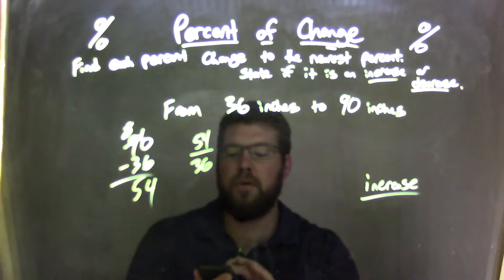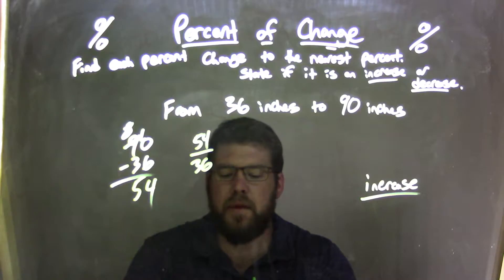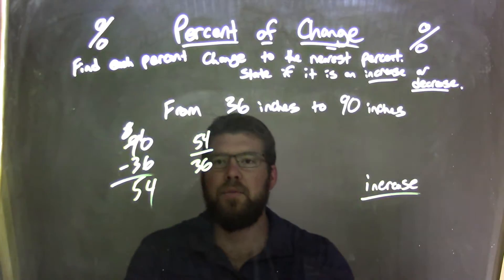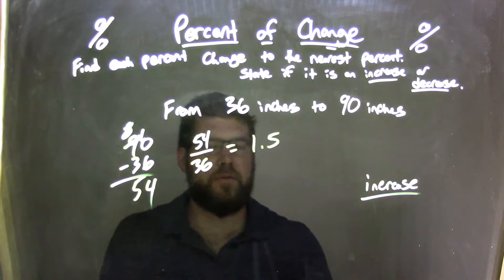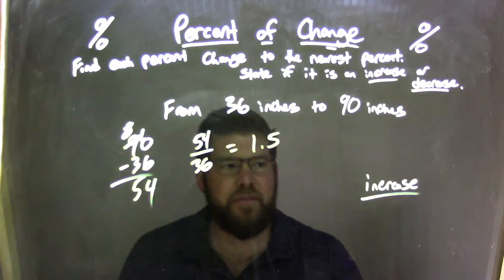I'm going to use my calculator for this one. 54 divided by 36 comes out to be, very easy, 1.5. So we have 1.5 here.